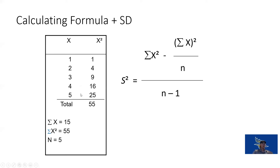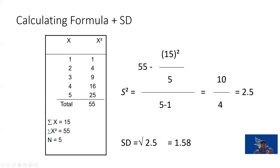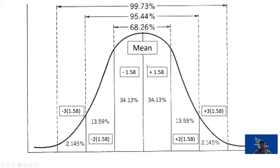Back to our previous example: the standard deviation is the square root of our calculated variance of 2.5, which gives us 1.58. So the mean plus 1.58 is one standard deviation, the mean plus 3.16 is two standard deviations, and so on. Within three standard deviations, 99.73% of scores should fall.